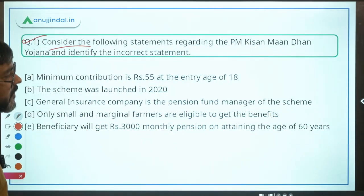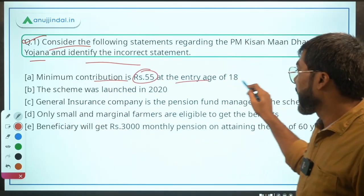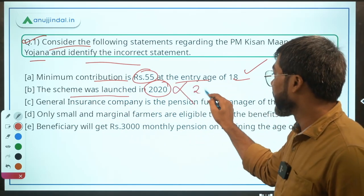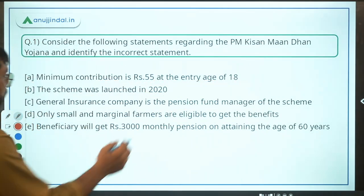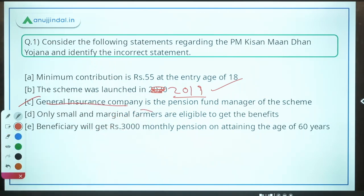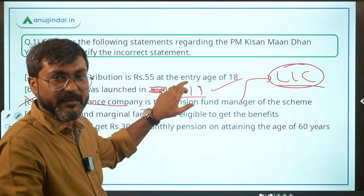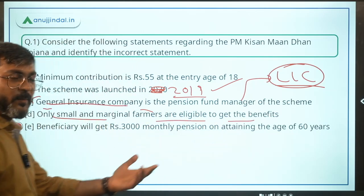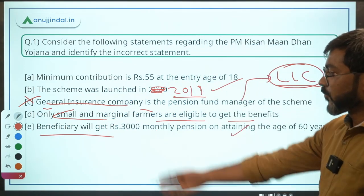Question 1: Consider the following statements about PM Kisan Mandan Yojana and identify the incorrect one. Minimum contribution is Rs. 55 at entry age 18 — correct. The scheme was launched in 2020 — incorrect, it was launched in 2019. General Insurance Company is the pension fund manager — also incorrect, it is LIC. Only small and marginal farmers are eligible — correct. Beneficiaries get Rs. 3000 monthly pension at age 60 — correct. Answer: Option C.